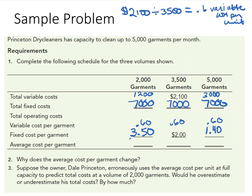Adding those together, the average cost per garment is $4.10 at 2,000 garments, $2.60 at 3,500 garments, and drops to $2 per garment at 5,000 garments. Here you can clearly see the more garments we clean, the less the cost per garment. The reason the average cost changes is not because of variable cost — it's because we have the same fixed cost spread out amongst more units.